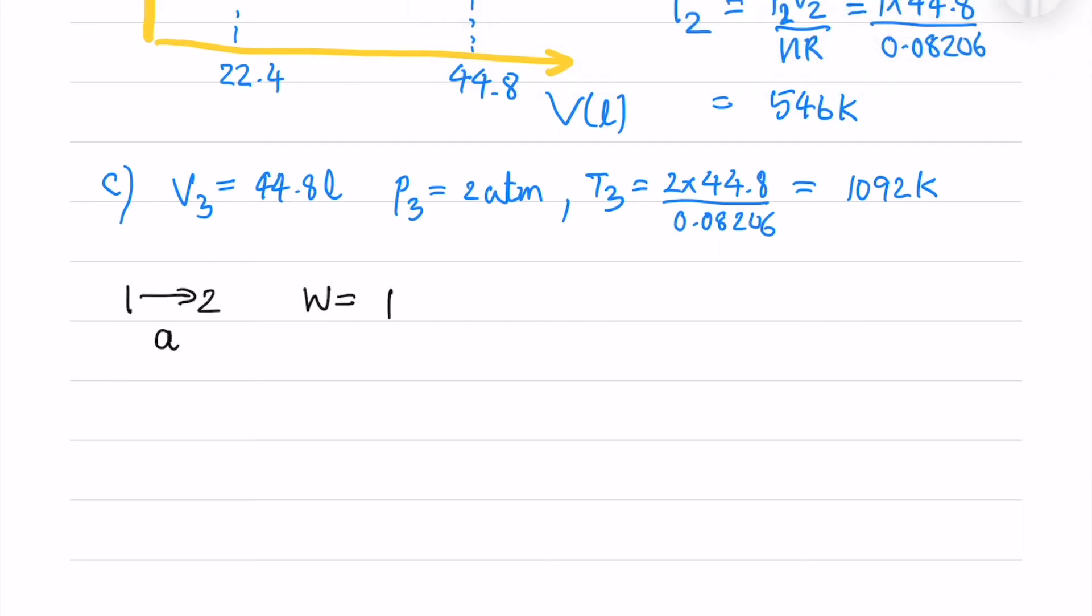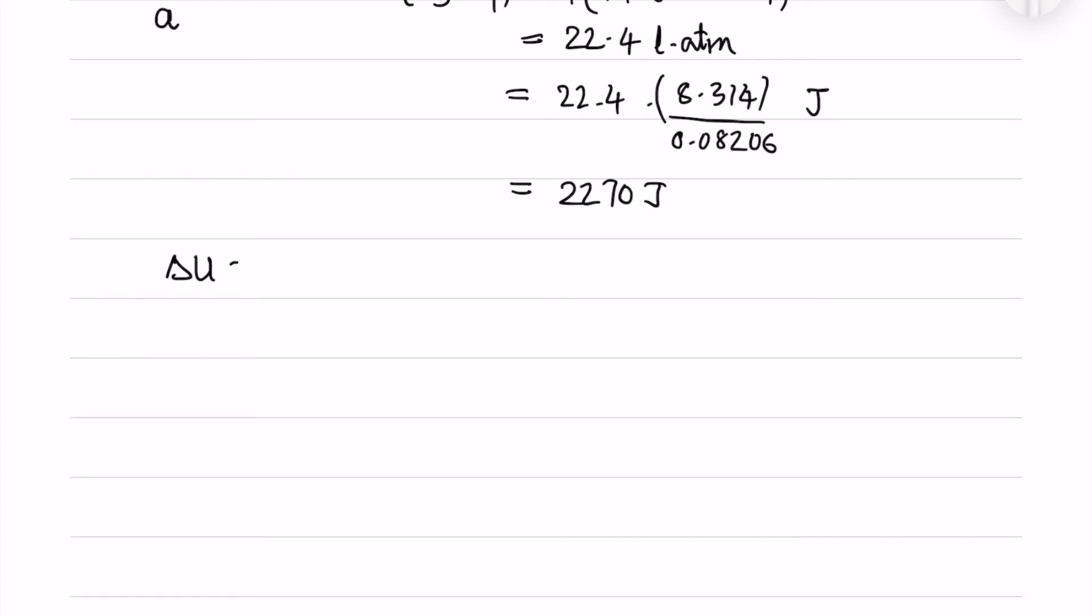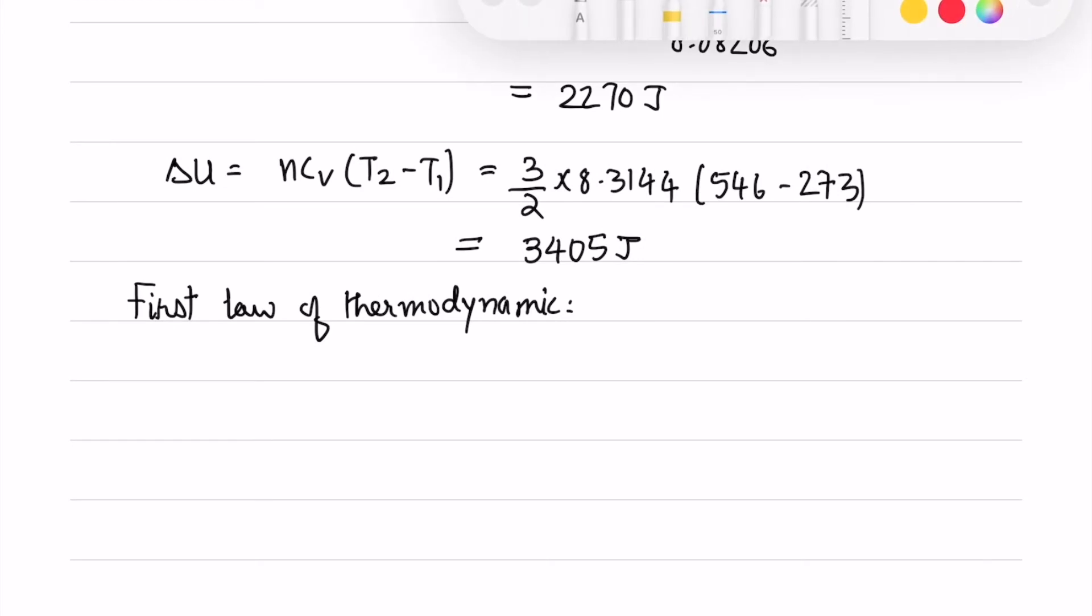So now we will calculate the work done which is nothing but integral PDV. So which is P times V2 minus V1. So we will get liter atmospheres. So to that we multiply the gas constants in joules by gas constants in liter atmospheres. And we will get the result in joules. So now we have delta U equals to N Cv delta T. So Cv is nothing but 3 by 2 times R which I have derived before. Now we will use that and get the answer. First law of thermodynamics states that delta U the change in internal energy equals to Q minus W. So we know delta U and W to find the Q heat transferred.